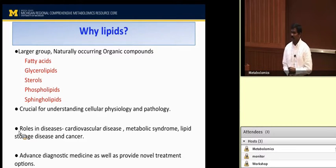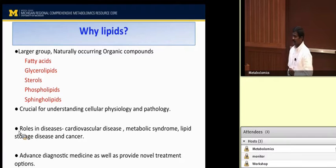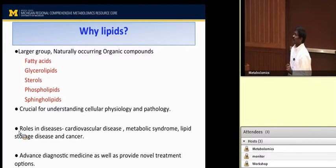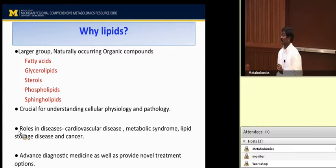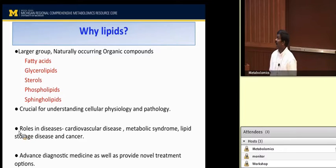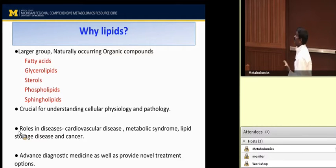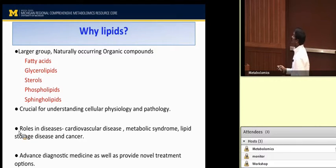Why do you want to study lipidomics? Why lipids? Lipids are a larger group of naturally occurring organic compounds with molecular weight less than 2,000. It includes fatty acids, glycerolipids, sterols, phospholipids, and sphingolipids. Many of the individual lipid species are associated with the evaluation of different diseases. Lipidomics is crucial for understanding cellular pathology and physiology in humans, plants, and indeed all organisms. Lipidomics can also explain the treatment and pathology of many diseases which include cardiovascular disease, metabolic syndrome, lipid storage disease, and cancer.